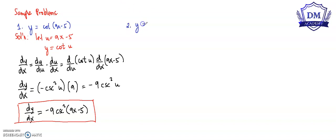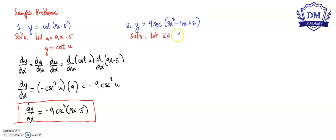Our function y is equal to 4 secant of 3x squared minus 11x plus 2. So in our solution, we will let u be equal to 3x squared minus 11x plus 2, and our function y is equal to 4 secant u.